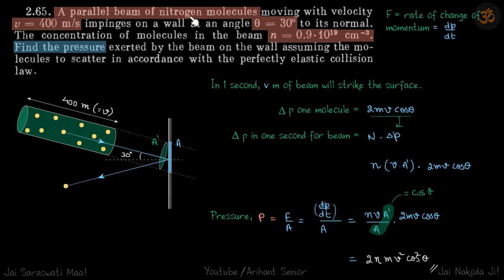A parallel beam of nitrogen molecules moving with velocity V strikes the wall at an angle of 30 degrees. So let's say this is the beam striking the wall at 30 degrees. The concentration of molecules is given as 0.1 times 10 to the power 19 molecules per centimeter cubed. Find the pressure exerted by the beam on the wall assuming elastic collision.